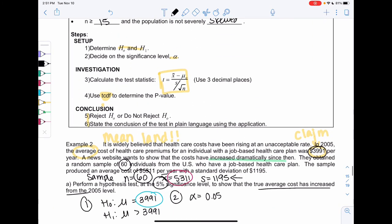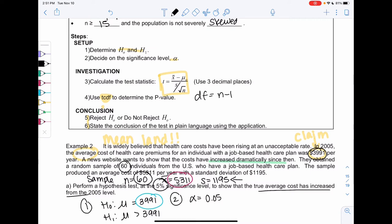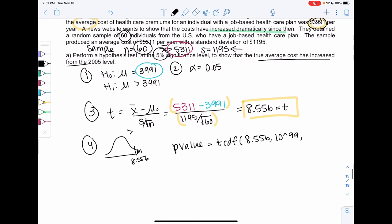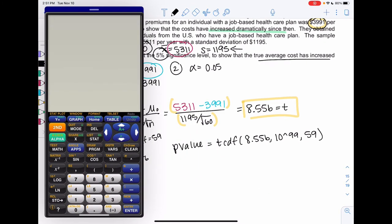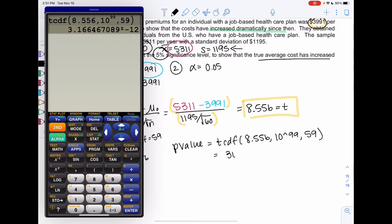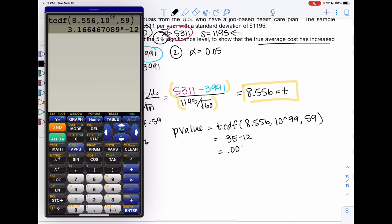Degrees of freedom is n minus 1. In this case, my n was 60, so degrees of freedom is 59. We'll find T-CDF, same menu as normal. Lower to upper, and degrees of freedom. I'm expecting a small p-value, because the area is very tiny. And we get 3e to the negative 12, which really means 0.000000000003. That's basically 0 to 4 decimal places, which is very little risk, way less than 0.05. So we'll go ahead and reject.